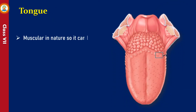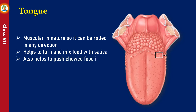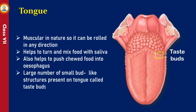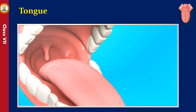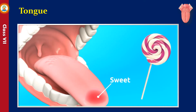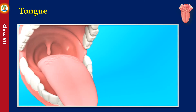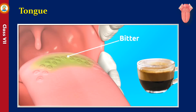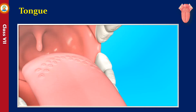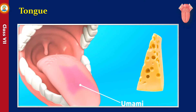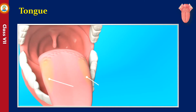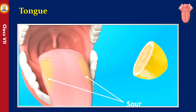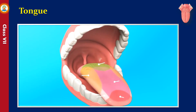Our tongue is muscular in nature so it can be rolled in any direction. It helps to turn and mix food with saliva and also helps to push chewed food into the esophagus. A large number of small bud-like structures on the tongue are called taste buds. Taste buds are sensory organs that detect different tastes. The adult human tongue contains between 2,000 and 8,000 taste buds. Human brains are able to detect five basic tastes: sweet, salty, bitter, umami, and sour. The entire tongue with the taste buds can sense all types of tastes more or less equally.